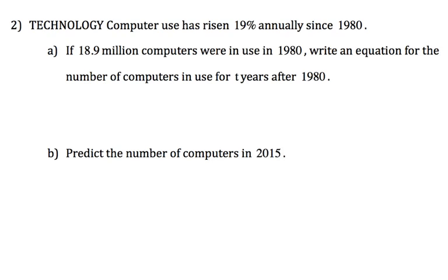Computer use has risen 19% annually since 1980. If 18.9 million computers were in use in 1980, write an equation for the number of computers in use for t years after 1980. Well, we got y is C times 1 plus r to the power of t. That is the initial value, right? So my initial value is 18.9, and I have to keep in mind that that's in millions. 1 plus 0.19.